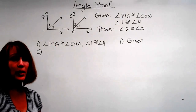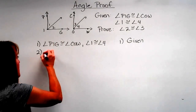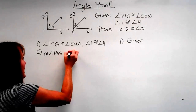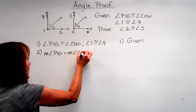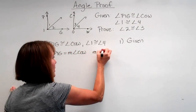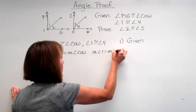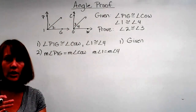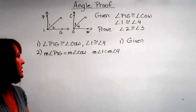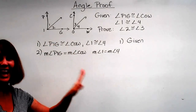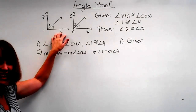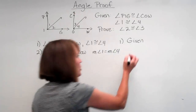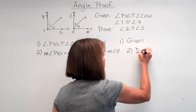Now we need to talk about measures, so we need to transition here. The measure of angle PIG is equal to the measure of angle COW, and the measure of angle one is equal to the measure of angle four. I can't start dealing with these angles unless I've gone to measurements, so I'm going to make that transition. How can I go from 'these are congruent' to 'the measures are equal'? That's the definition of congruent angles.